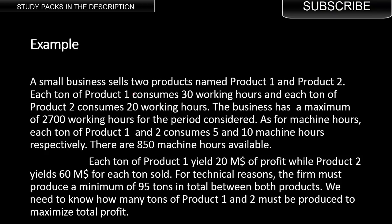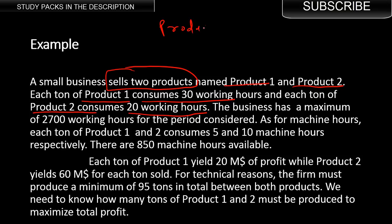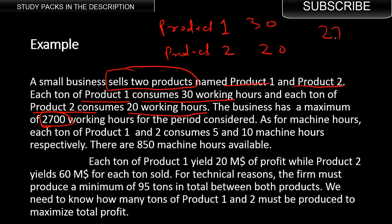Here's our example. A small business sells two products — product one and product two. Each ton of product one consumes 30 working hours; each ton of product two consumes 20 working hours. The business has a maximum of 2,700 hours available for the period considered.